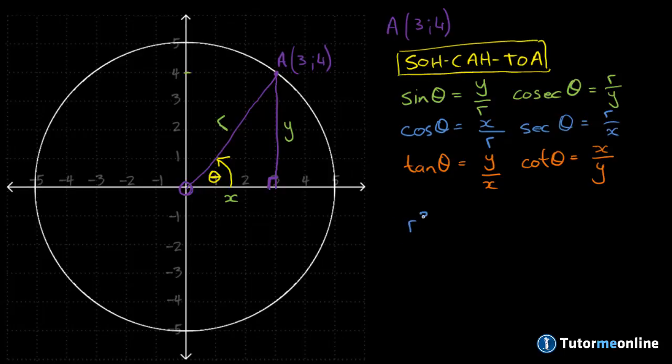So r squared would of course be, or the hypotenuse squared, is equal to the sum of the opposite squared plus the adjacent squared. So that would be x squared plus y squared.